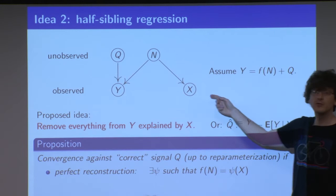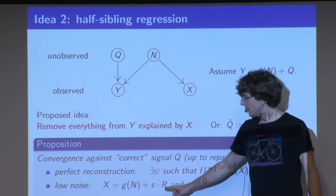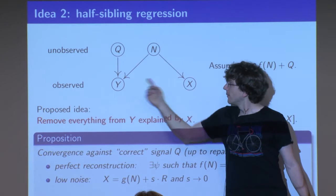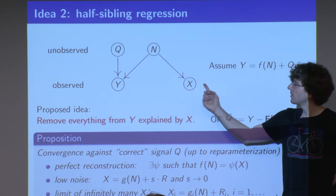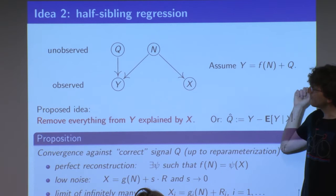You can do some theory here. The assumptions tell you that you're not doing something entirely stupid — you converge against the correct signal, though only up to reparameterization. You can reconstruct the signal if the whole influence of systematic noise can be captured as a function of X. If you have not just one but many other measurements, you can use all of them to remove everything in Y that is explained by these X's, hoping to remove almost everything from the systematic noise.